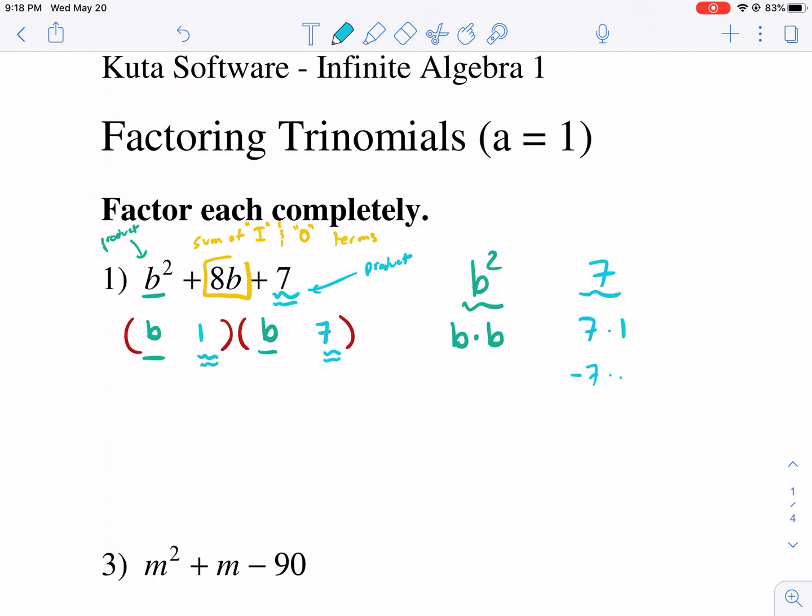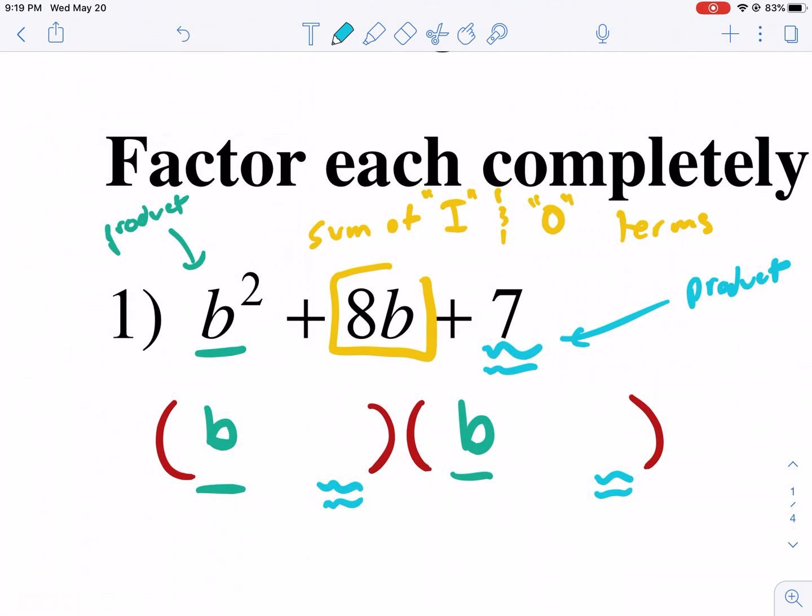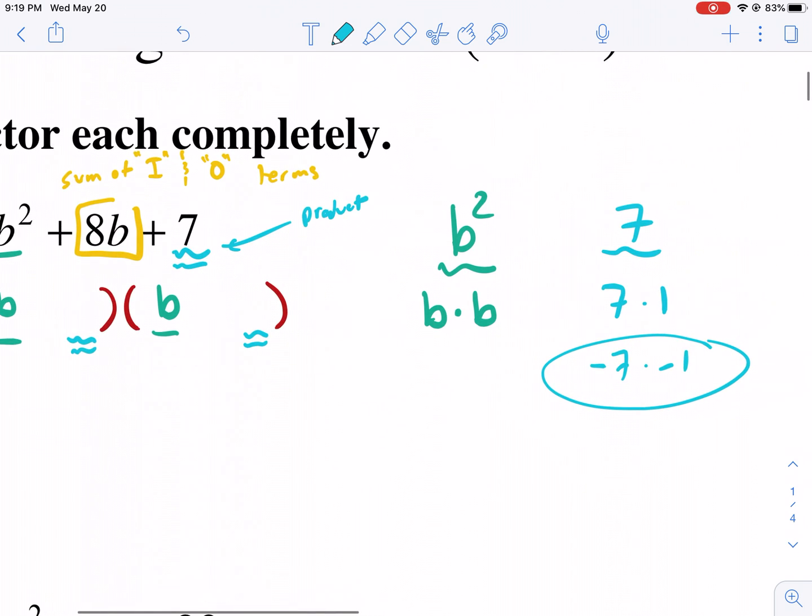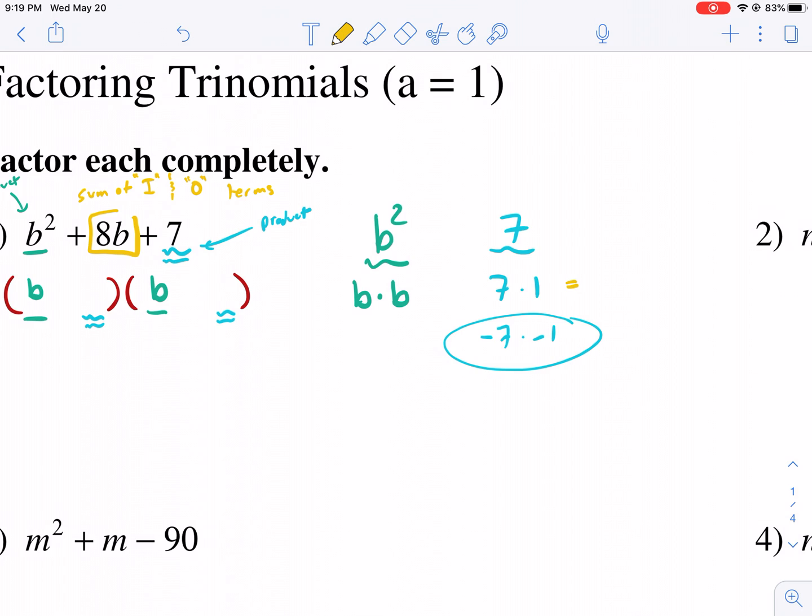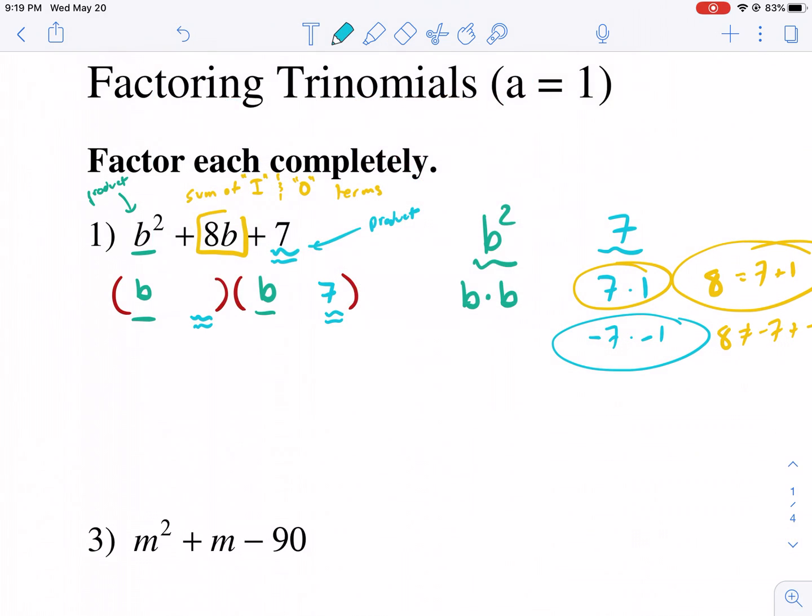But we also should consider 7 times negative 1. Now, negative 7 times negative 1 also equals positive 7. So maybe I shouldn't have been so quick with writing down positive 7 and positive 1. So how do I know it's going to be positive 7 and positive 1? Well, that's where this one comes in. The middle term is an indication of which terms you should choose. Because the factors of 7 need to add up to the middle coefficient of 8. So 7 plus 1 equals 8. But 8 does not equal negative 7 plus negative 1. Therefore, we're going to choose these as our factors for 7. So 7, 1, and they're both positive. And that is how we factor.